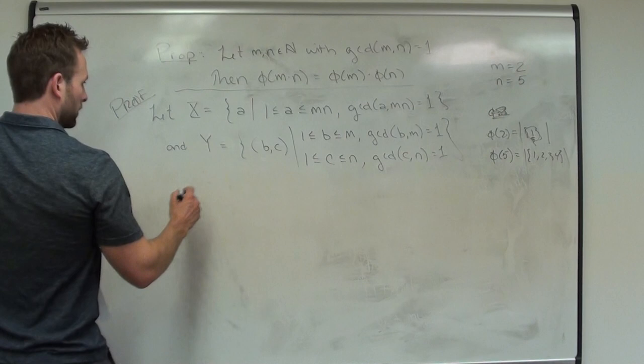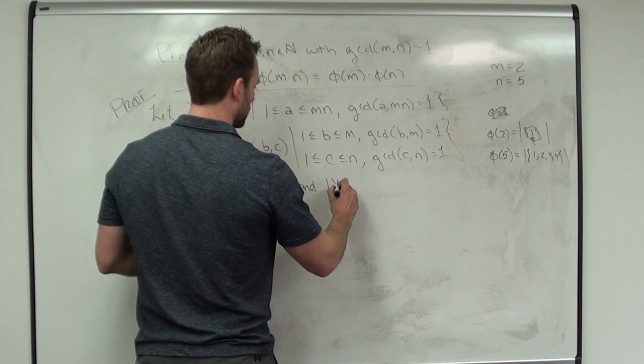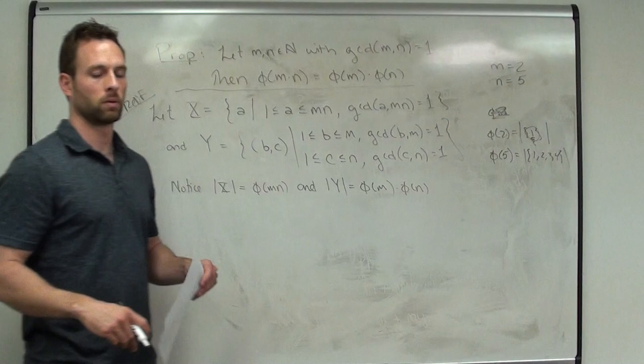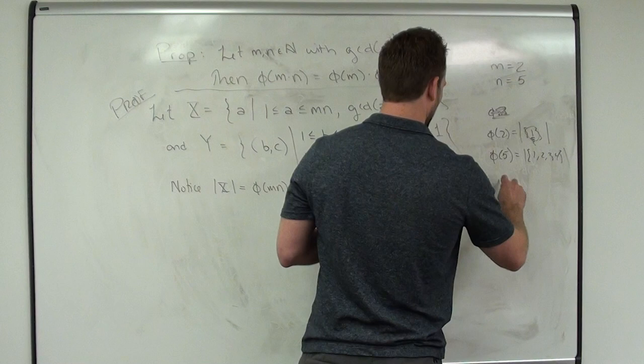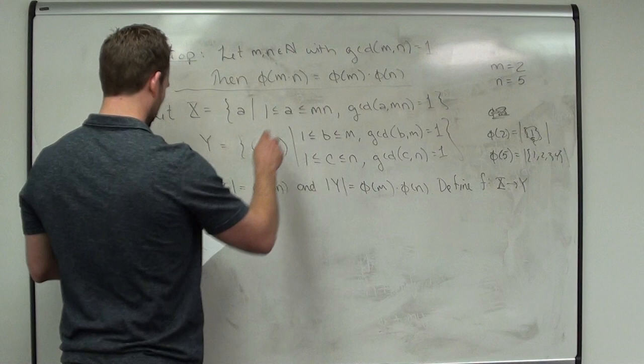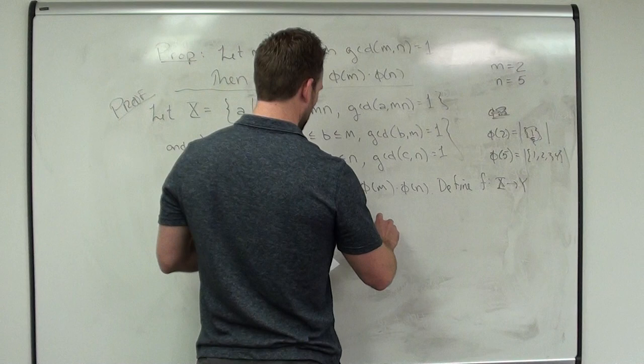The cardinality of X is phi(m·n), and the cardinality of Y — all the B's gives phi(m), all the C's gives phi(n), and the product of those is the ordered pair count. So here's our function: define f from X to Y by f(a) = (a mod m, a mod n). Remember, if we're landing in Y we need to be an ordered pair.